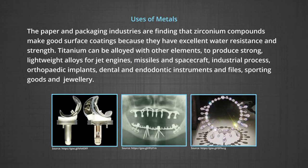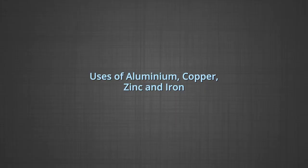Titanium can be alloyed with other elements to produce strong lightweight alloys for jet engines, missiles and spacecraft. Industrial processes, orthopedic implants, dental and endodontic instruments and files, sporting goods and jewelry. The main physical property of both titanium and zirconium, which belong to the same group, is that they are resistant to corrosion and have a high strength to density ratio.